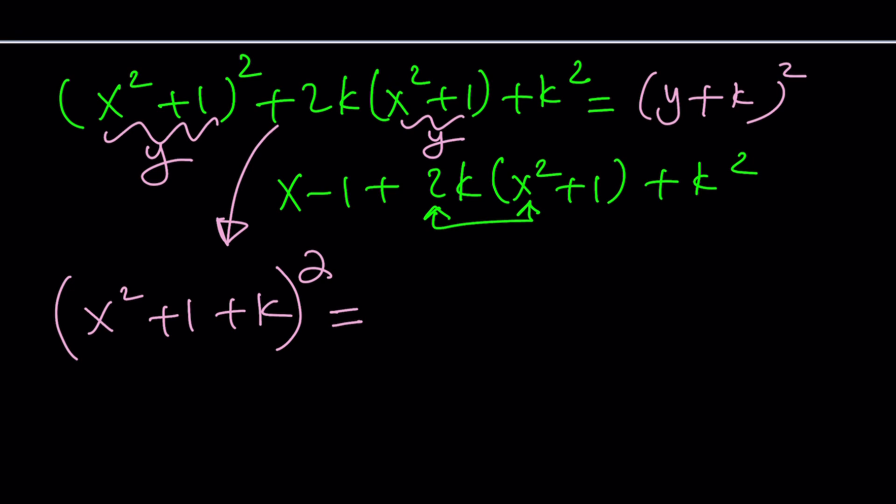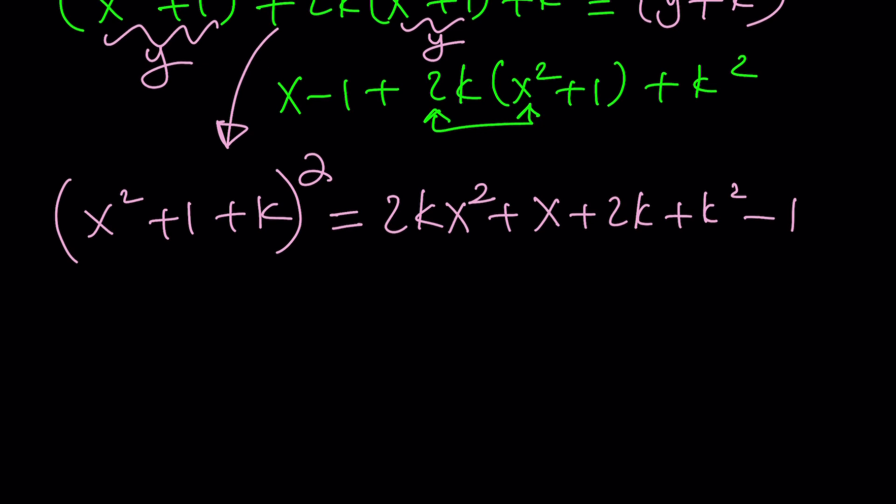In other words, this is x squared plus 1 plus k quantity squared. That comes from here. And on the right-hand side, let's go ahead and rearrange these terms. 2k x squared, and then I have the plus x, and then I have the constants, which is 2k plus k squared minus 1. Now, here's the trick. The left-hand side is a perfect square. The right-hand side should also be a perfect square. So discriminant delta needs to be 0, right? That's a quadratic. Easy.